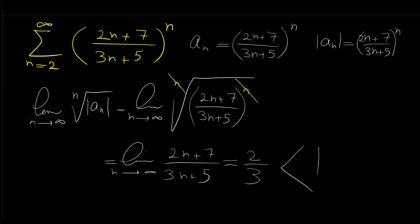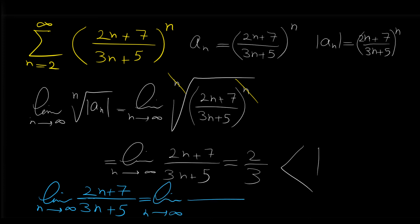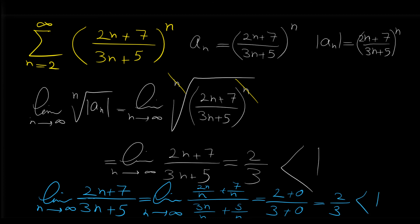Let me show another way to see why this limit is 2 over 3. For finding limits like this, we divide the numerator and denominator by the highest degree of n in the denominator, which is 1. So we divide every term by n: we get (2n over n plus 7 over n) all over (3n over n plus 5 over n). As n approaches infinity, 2n over n is 2 and 7 over n goes to 0. In the denominator, 3n over n is 3 and 5 over n is 0. So the limit is 2 over 3, and because the limit is less than 1, the given series is convergent.